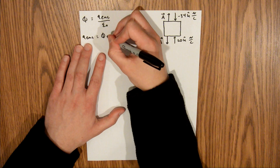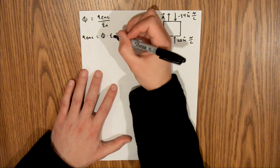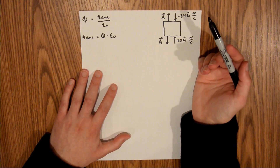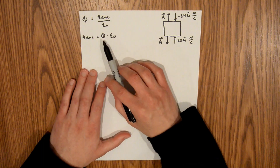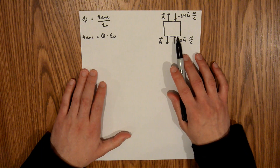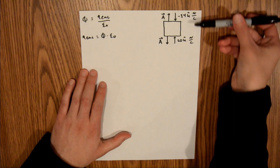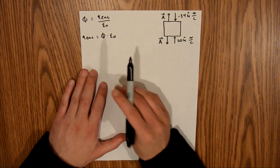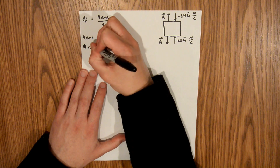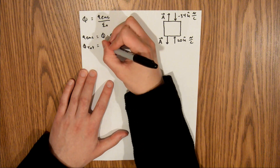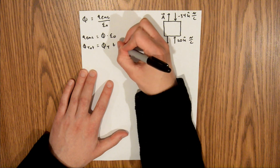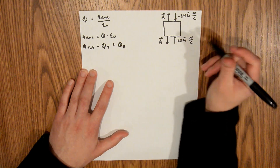So Q enclosed is equal to flux times epsilon naught. Now we know epsilon naught — that's a universal constant — but we need to find our total flux into the cube, which is the addition of our flux from the top and our flux from the bottom. So flux total is equal to the flux at the top plus the flux at the bottom.